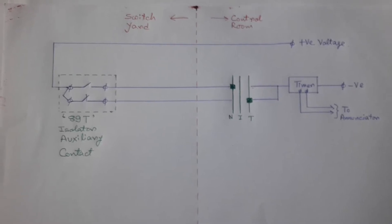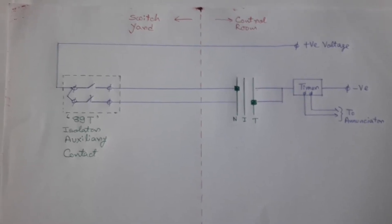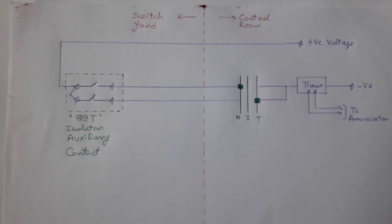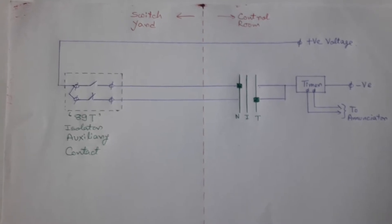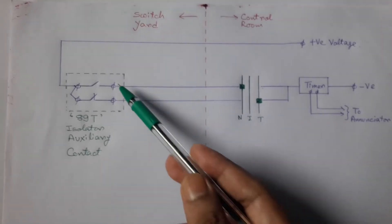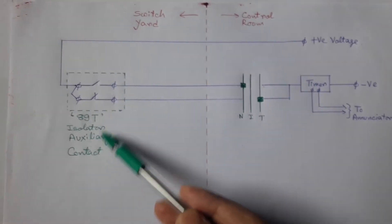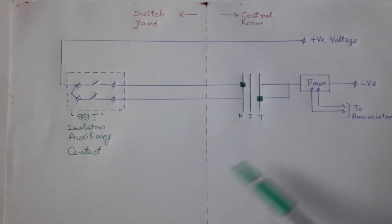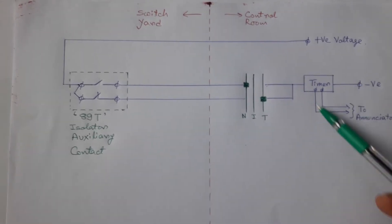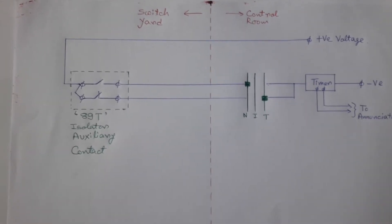In this video, we will discuss how TTS switch wrong position indication works. This is a very simple scheme consisting of isolator auxiliary contact, one switch, and one timer.